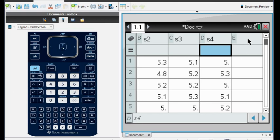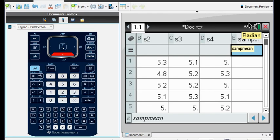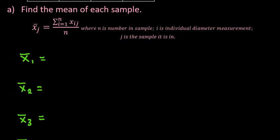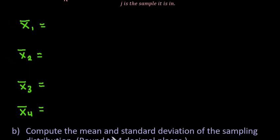What I'm going to do now is add a fifth column and label it 'Samp Mean' — this is going to represent the sample mean. I'm going to find the mean for each sample in the list and spreadsheet, because after we find each sample mean, we're going to compute the mean and standard deviation of the sampling distribution. This will be an estimate of the mean since the population mean is unknown. When we don't know the population mean, we find multiple samples and then find the mean of all the sample means.